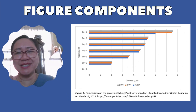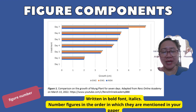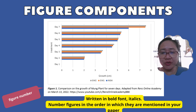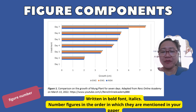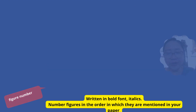Let us study the different figure components. One figure component is the figure number. The figure number is written below the figure, in bold font and italics. You have to number the figures in the order in which they are mentioned in your paper, like Figure 1, Figure 2, Figure 3, and so on.